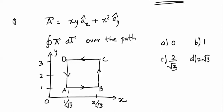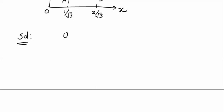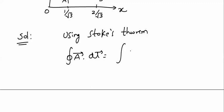To find ∮A·dl along this path, if you try to solve the left-hand side directly you need to evaluate four integrals. Instead, by applying Stokes theorem: ∮A·dl = ∬(∇×A)·dS. Using this relation, if you find ∇×A and use the right-hand side, it will be much simpler and take less time.